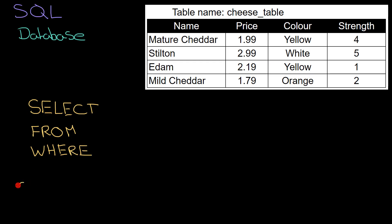You can help remember them by the initialism SFW — so if you're doing things in databases you are safe for work. SELECT, FROM, and WHERE are three very important words, and using these words you can start to put together things called queries to get information from the database.